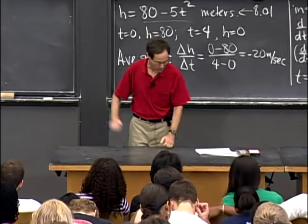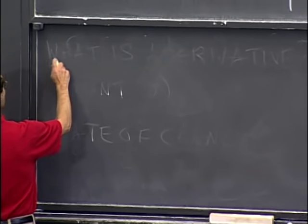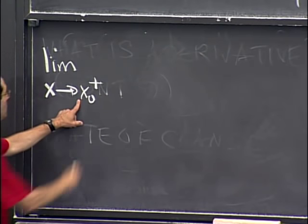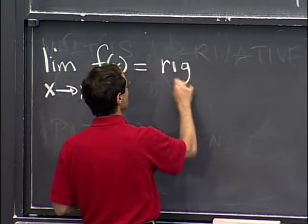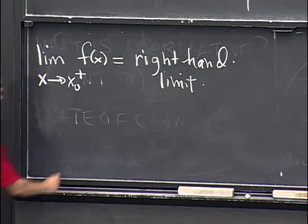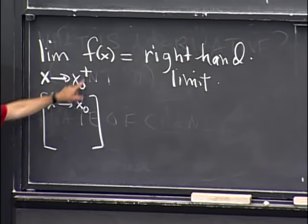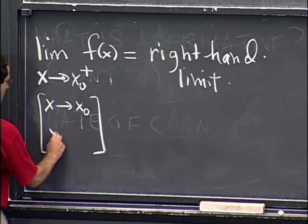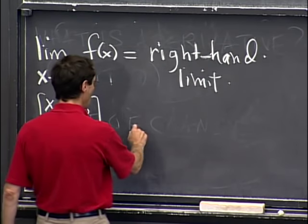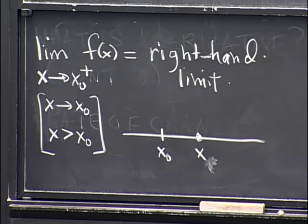To make things easier, I'll introduce left-hand and right-hand limits. The limit as x tends to x₀⁺ is the right-hand limit — x is bigger than x₀, approaching from the right side of the number line. Similarly, the limit as x tends to x₀⁻ is the left-hand limit, where x is to the left of x₀.